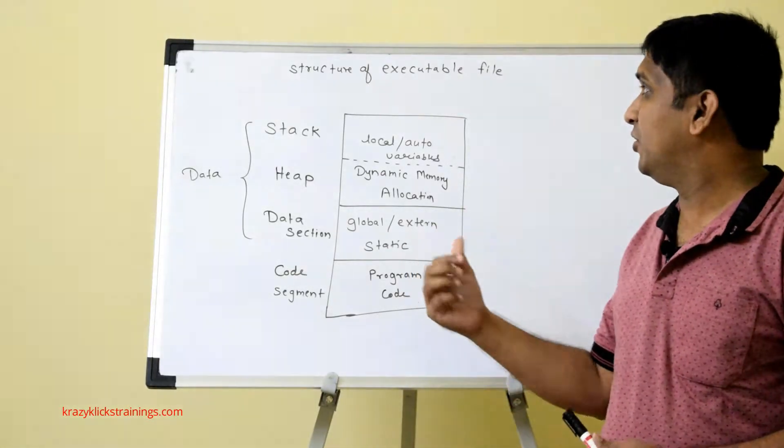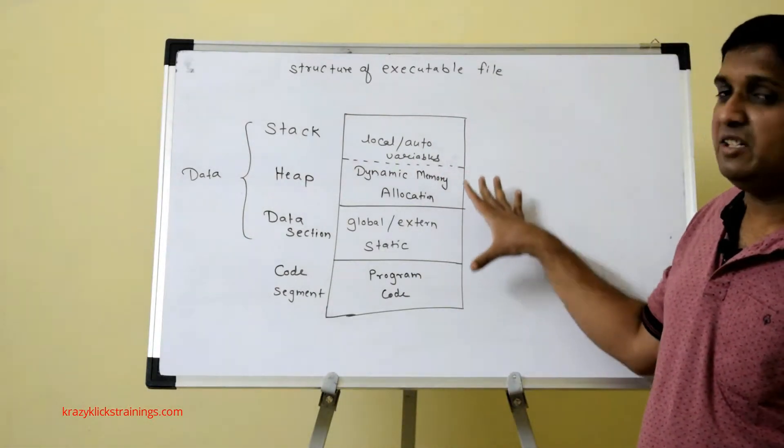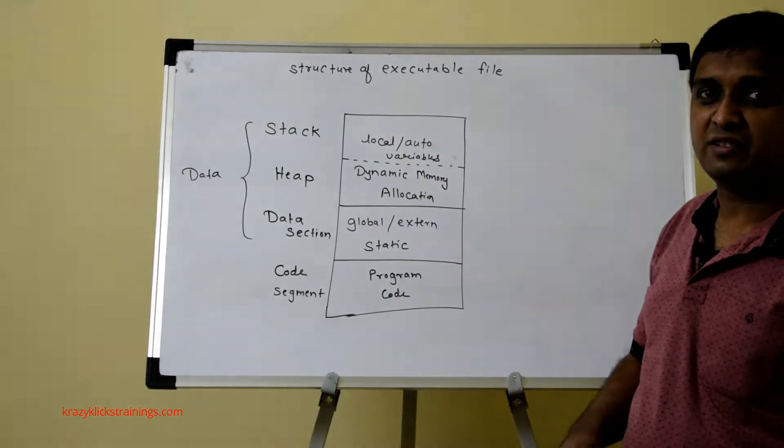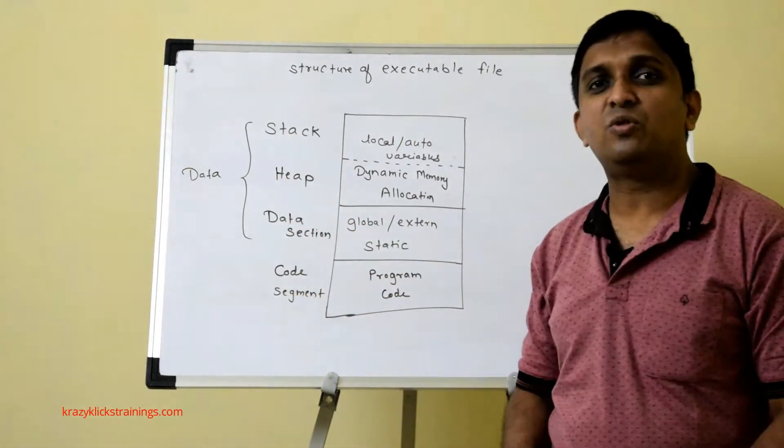This is a diagram of an executable file where the memory is divided into four logical parts. The four logical parts are stack, heap, data section, and code segment.